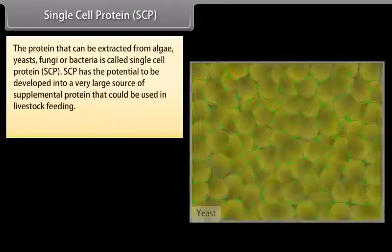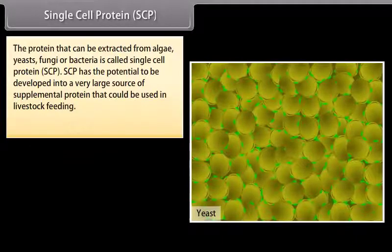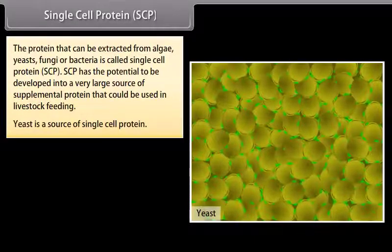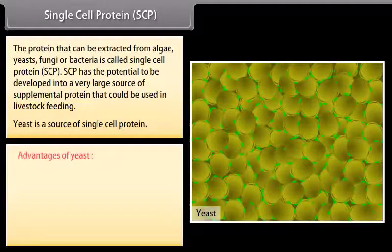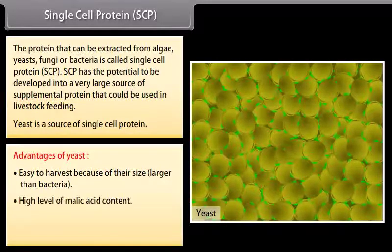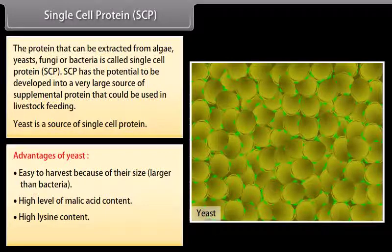Single cell protein (SCP). The protein that can be extracted from algae, yeasts, fungi or bacteria is called single cell protein. SCP has the potential to be developed into a large source of supplemental protein for livestock feeding. Yeast is a key source of single cell protein. Advantages of yeast include: easy to harvest due to larger size than bacteria, high malic acid content, high lysine content, and ability to grow at acidic pH.